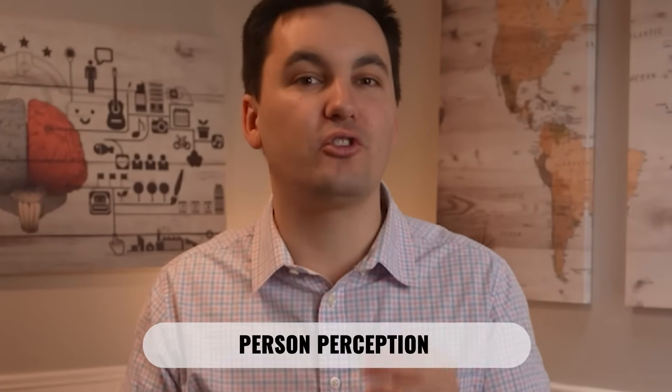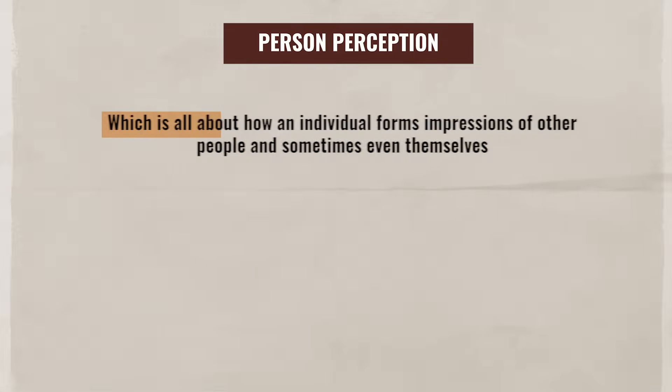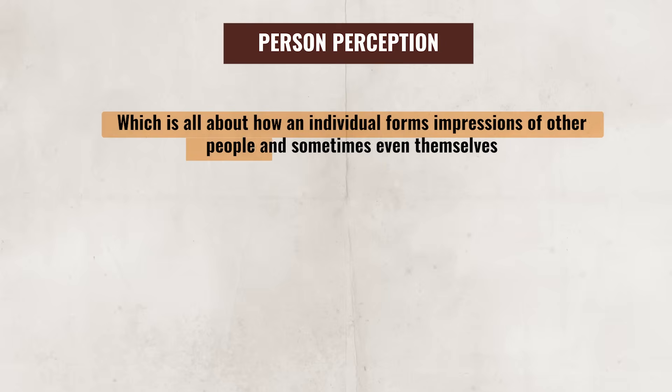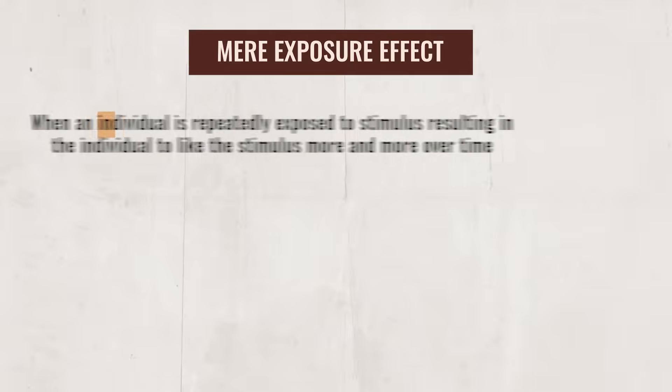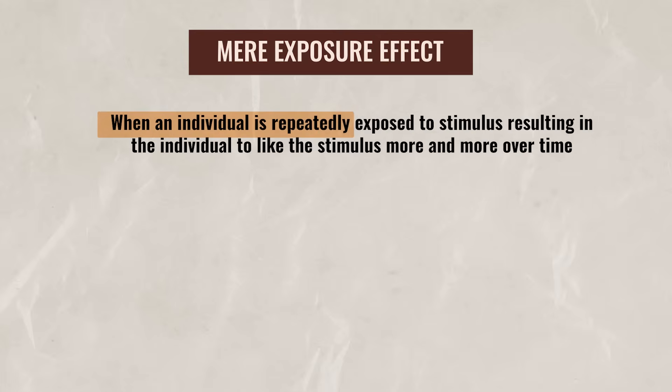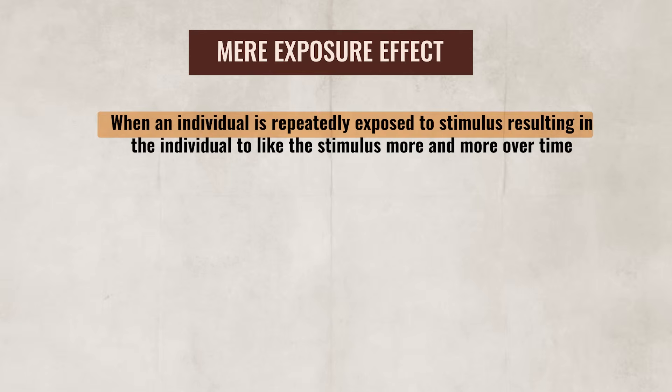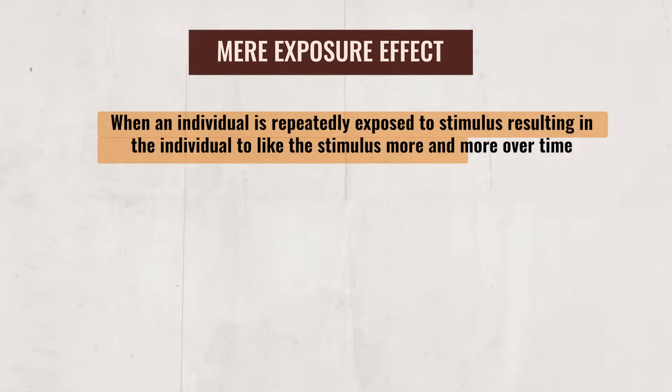Alright, so we have spent some time talking about attributions. Now let's shift our focus over to person perception, which is all about how an individual forms impressions of other people and sometimes even themselves. One effect that impacts an individual's perception is the mere exposure effect, which occurs when an individual is repeatedly exposed to a stimulus, resulting in the individual liking that stimulus more and more over time.